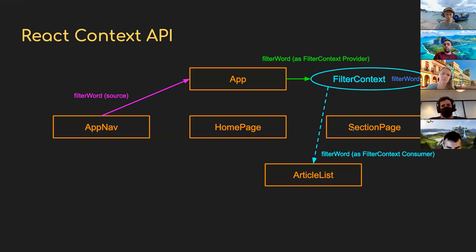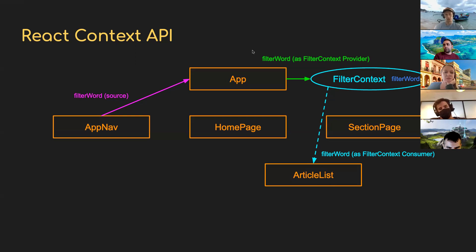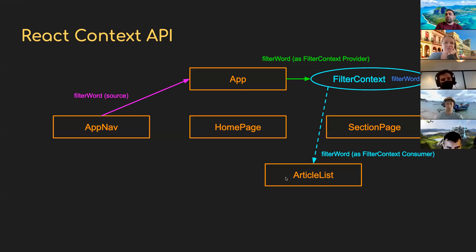Does the context have to be created by the parent? AppNav is not creating the filter context object — it's just populating it. We create the context as developers to have that cloud existing. App is the provider of the data, and ArticleList can be the consumer. The provider of the data has to be a parent of whoever consumes it.